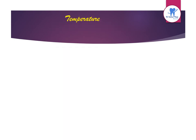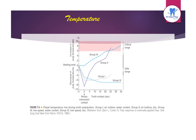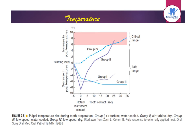Considerable heat is generated by friction between the rotary instrument and the surface being prepared. This graph shows pulp temperature rise during tooth preparation. There is a safe range and a critical range. Four groups are compared: Group 1 is air turbine water-cooled, Group 2 is air turbine dry, Group 3 is low speed water-cooled, and Group 4 is low speed dry.